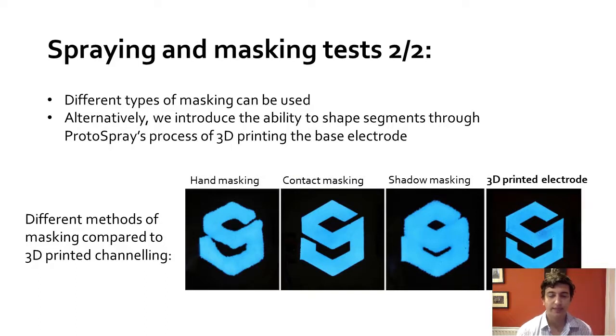Different types of masking can be used. As an alternative, we introduced the ability to shape segments through Protospray's process of 3D printing the base electrode. We performed a test to establish the potential of 3D printing a base electrode. We tested different types of masking: hand masking, contact masking, and shadow masking. Comparing these to an embedded electrode of conductive plastic, we saw that contact masking was particularly clear cut, but the 3D printed electrode was even clearer.